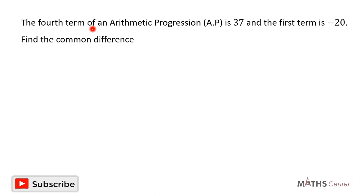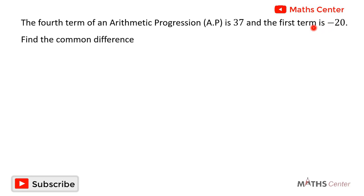The fourth term of an arithmetic progression AP is 37 and the first term is negative 20. Find the common difference.